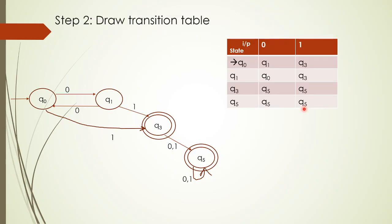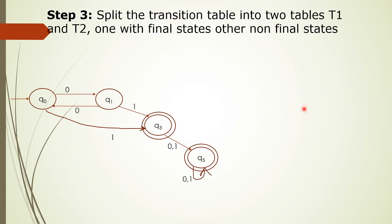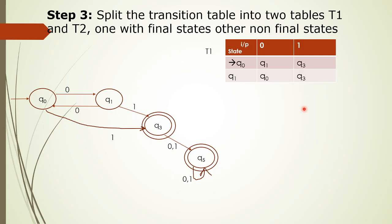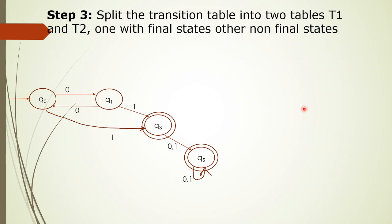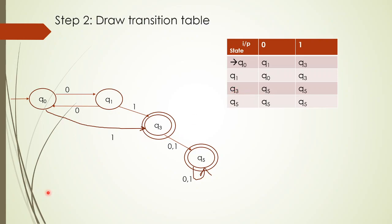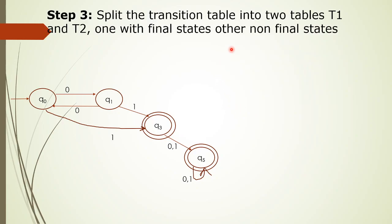The transition table steps are done. Now we split the table into two tables — T1 for final states and T2 for non-final states. Q3 and Q5 are the final states. Q0 and Q1 are the non-final states. So T1 contains Q3 and Q5 (final states), and T2 contains Q0 and Q1 (non-final states).